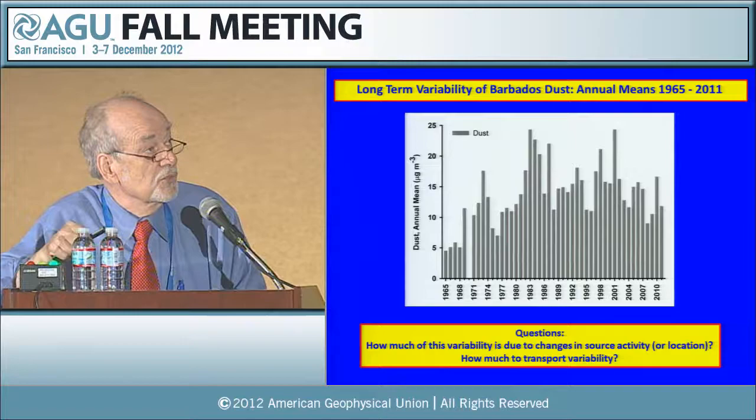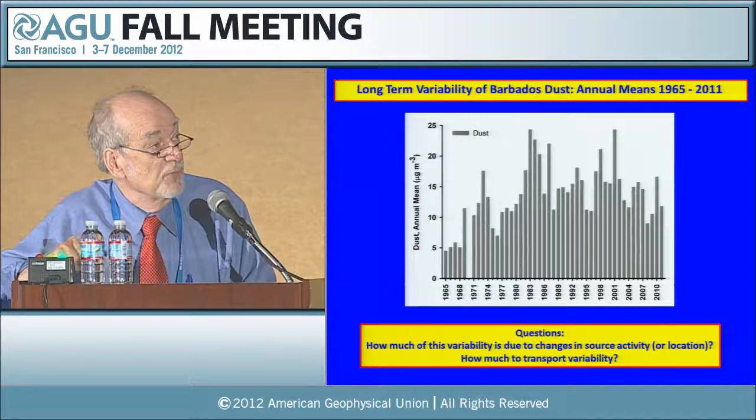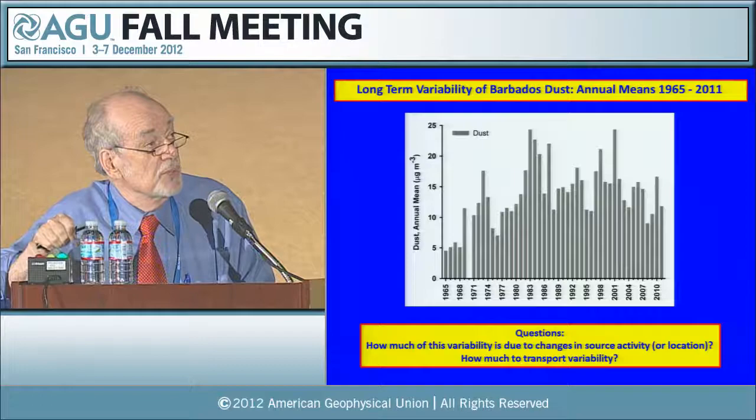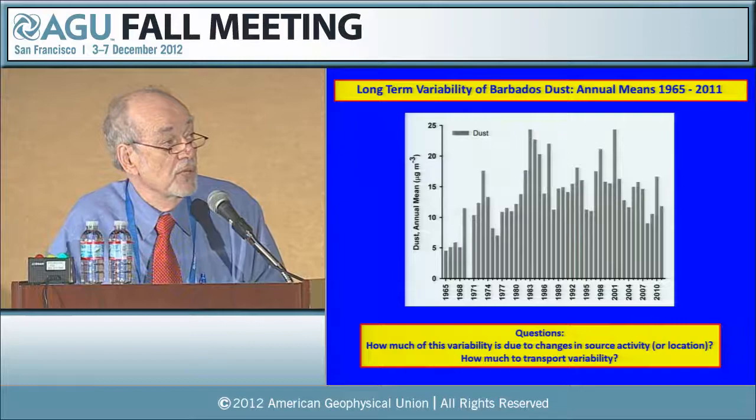These are annual mean dust concentrations in micrograms per cubic meter of air for the entire record. As mentioned, this is the first drought and this is the second drought. Subsequent to the mid-1980s, dust concentrations remain at a relatively high and variable level — some years as high as during the peak of the drought — so it's a very dynamic situation.